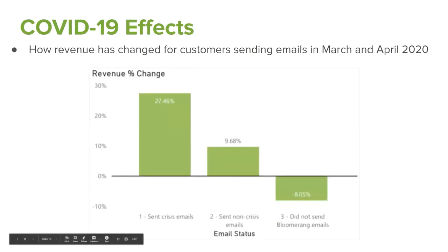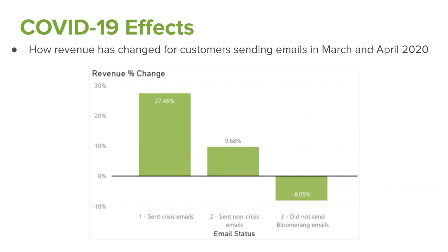Here's the first slide — I really wanted to share this with everyone. This is how revenue has changed specifically for our Bloomerang customers sending emails between March and April of 2020, comparing that to March and April of 2019. You might be asking yourself whether or not now is the right time to bother your supporters with more emails. You probably think they're getting plenty already, but when we pulled this data, customers who sent emails this year raised anywhere between 9% to almost 28% — specifically 27.46% — more money than they did in March and April of 2019.